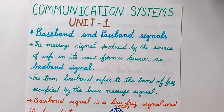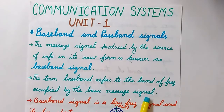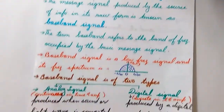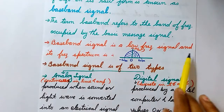Talking about the very first term — the baseband: any message signal which is produced directly from the source of information in its very basic or raw form is called as the baseband signal. We can say that the signal which is produced directly from the source of information without any modification is called as the baseband signal. The baseband term refers to the band of frequencies occupied by the basic message signal.